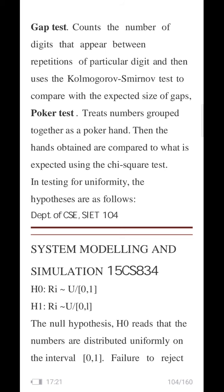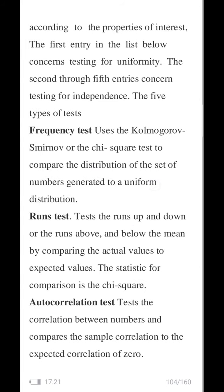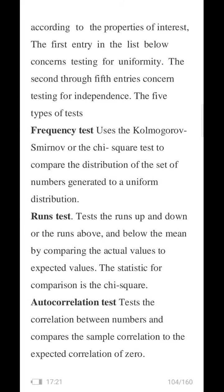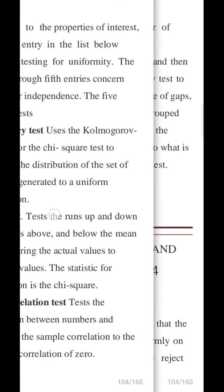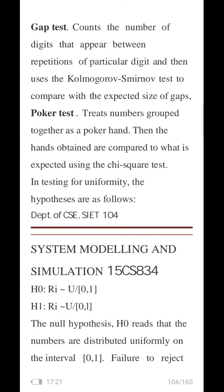The gap test uses the Kolmogorov-Smirnov test or chi-square test to compare with the expected size of gap. Once again it is a uniformity test, since the first category of test is used here as well — it is used to compare the number of repetitions of the digit. The fifth category is the poker test, which treats numbers grouped together as a poker hand.